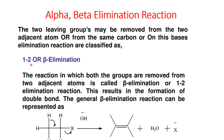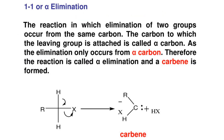Elimination reactions include beta elimination (1-2 elimination) and alpha elimination (1-1 elimination). In beta elimination, hydrogen and the leaving group are removed from adjacent carbon atoms — the alpha and beta carbons. In alpha elimination, both hydrogen and X are cleaved from the same carbon, forming a carbene intermediate. This is alpha elimination or 1-1 elimination.